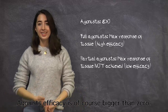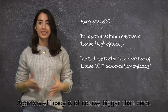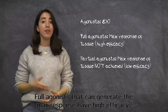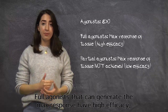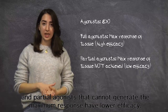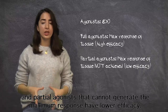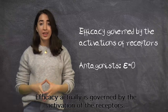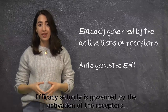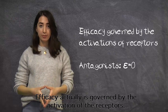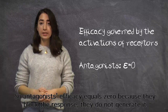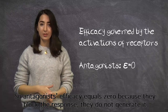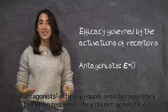An agonist's efficacy is of course bigger than zero. Full agonists that can generate the maximum response have high efficacy, and partial agonists that cannot generate the maximum response have lower efficacy. Efficacy is governed by the activation of the receptors, so antagonist efficacy equals zero because they block the response — they do not generate one.